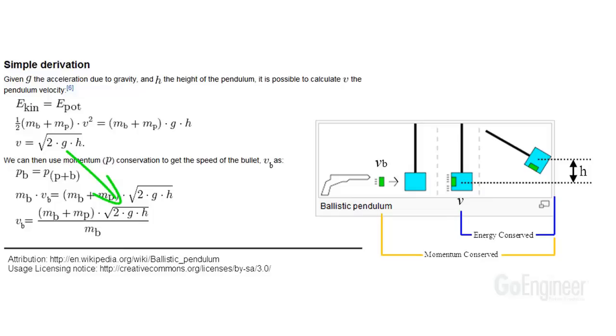We plug in the system velocity, little v, just after impact, and solve for the muzzle velocity of the bullet, vb.